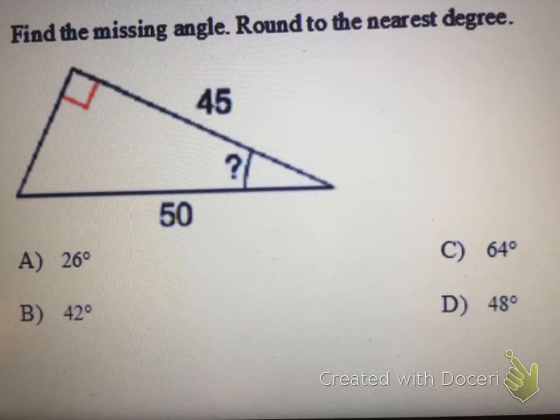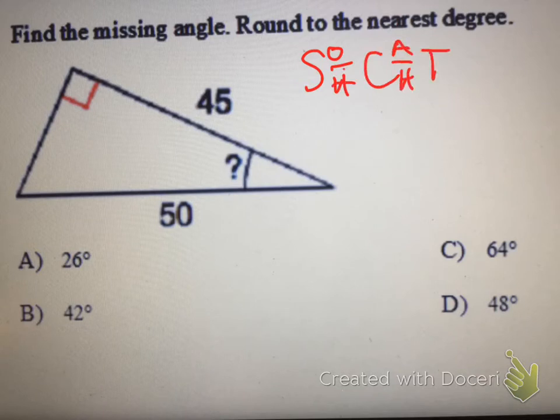We'll start by labeling the sides of our triangle and writing SOHCAHTOA. Some old hippie caught another hippie tripping on acid.